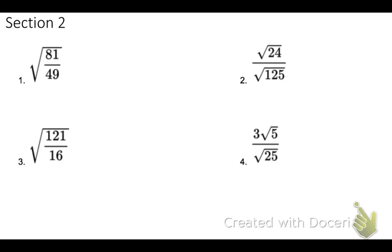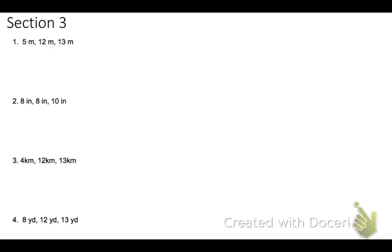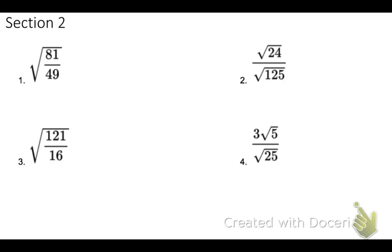So let's take the square root of 81 divided by 49. So just to review, a radical with a fraction under it, you can separate into the square root of 81 over the square root of 49.